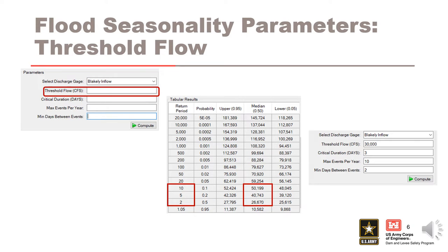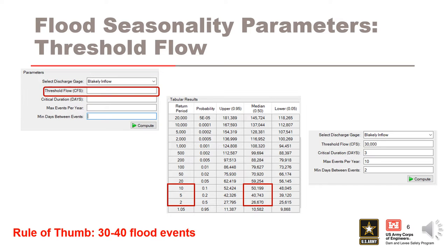Considering these two goals, the threshold should typically be set to a rare enough frequency that will still provide a sufficiently large sample size. A rule of thumb is to select the largest return period or smallest annual exceedance probability that produces a sample size on the order of 30-40 flood events. Determining an appropriate threshold flow is often an iterative process.